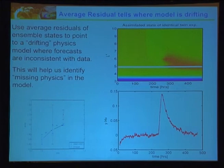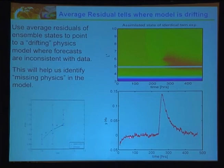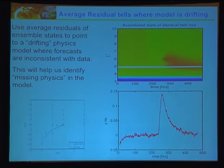Here's a more detailed schematic of how we identify where the model was drifting. We used an average residual of ensemble states to point to a drifting physics model where forecasts aren't consistent with data. This helps identify missing physics in the model. Here we can see the innovation — the difference between observations and model — showing good agreement in some regions, but in this region we have really bad agreement, meaning the model error was dominating and the model started to drift away from the observations.